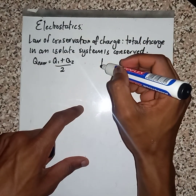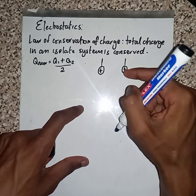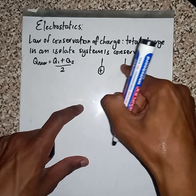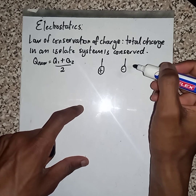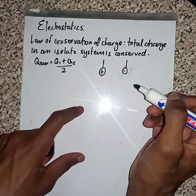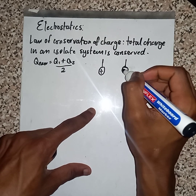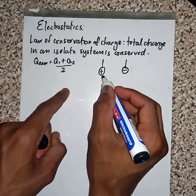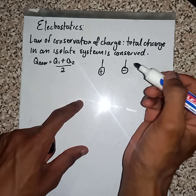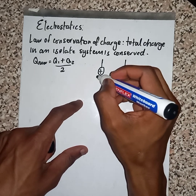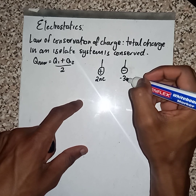What I'm going to do is give you two charges — one which is positive and another one which is negative. These two charges should be identical in size. This one is positive, this one is negative. Let's say this one is 2 nanocoulombs, and this one is minus 3 nanocoulombs.